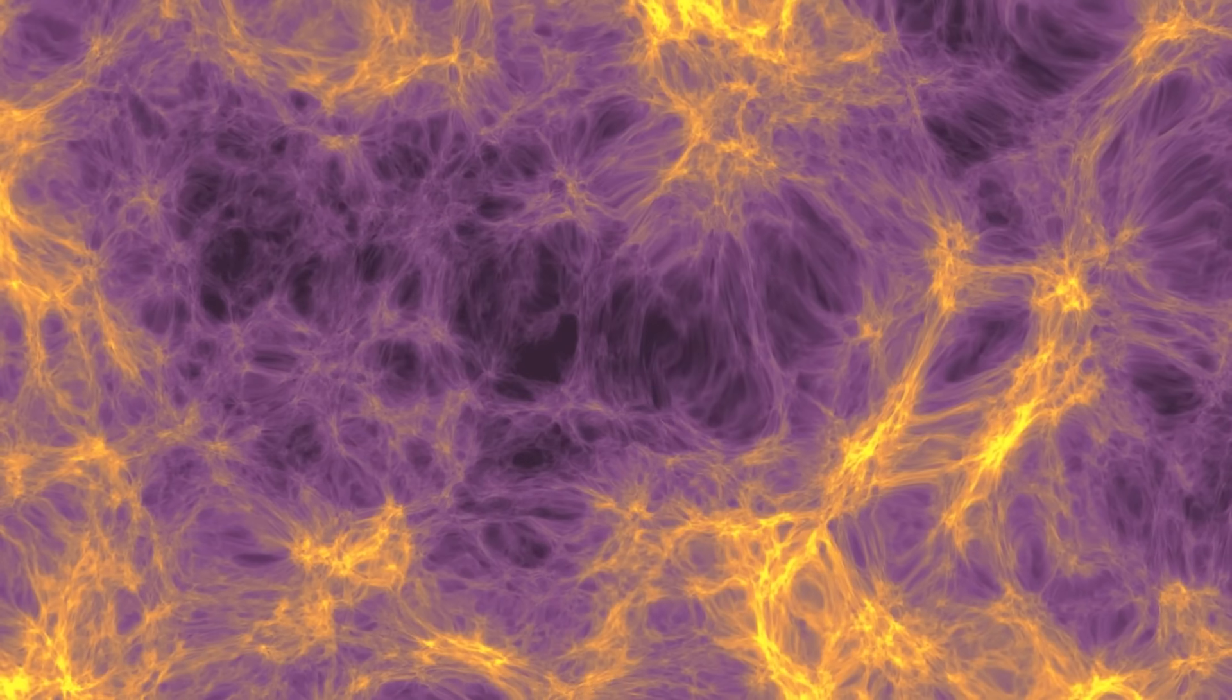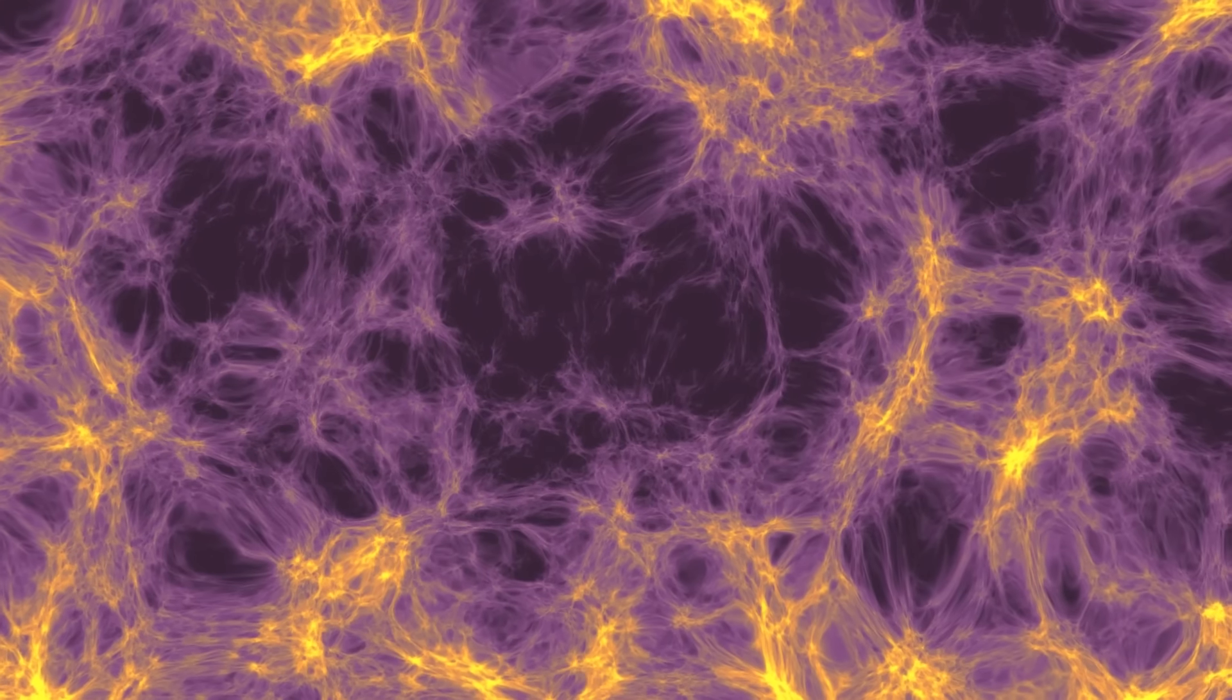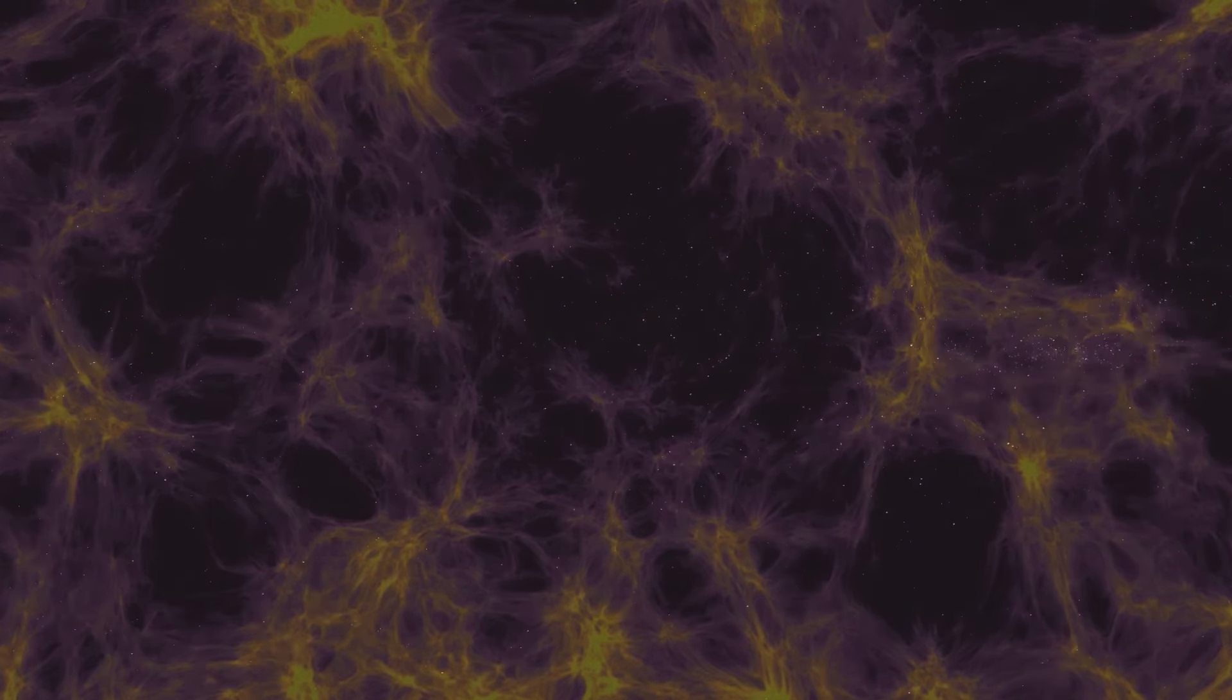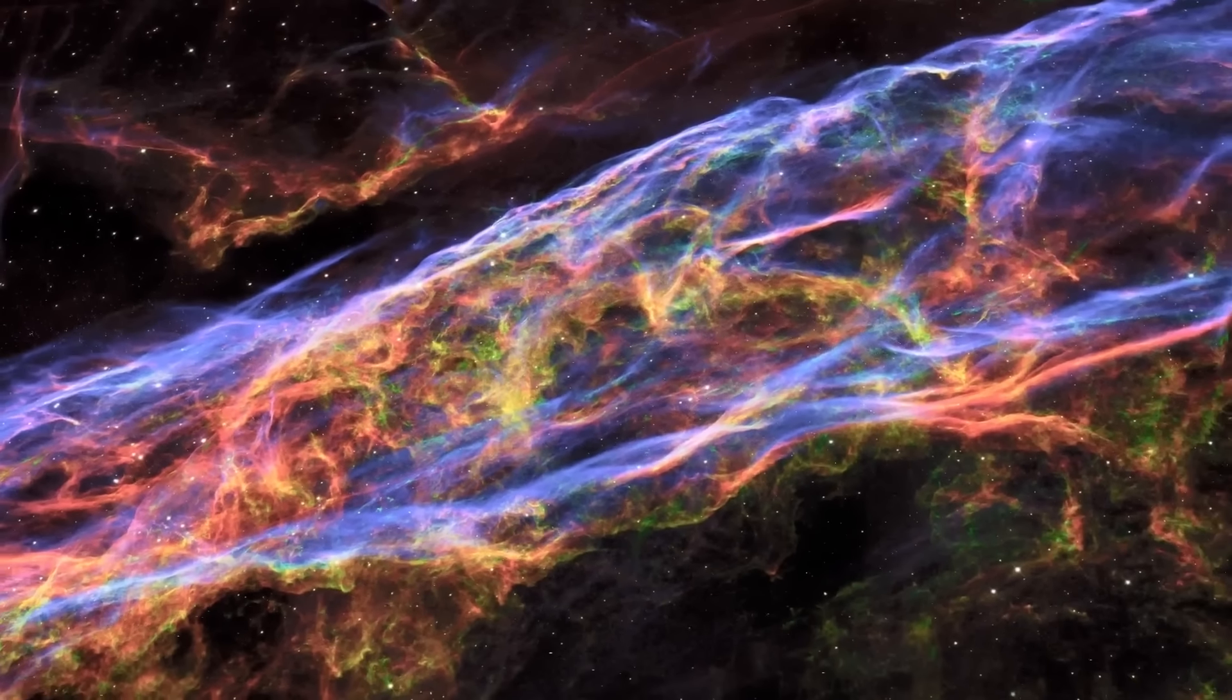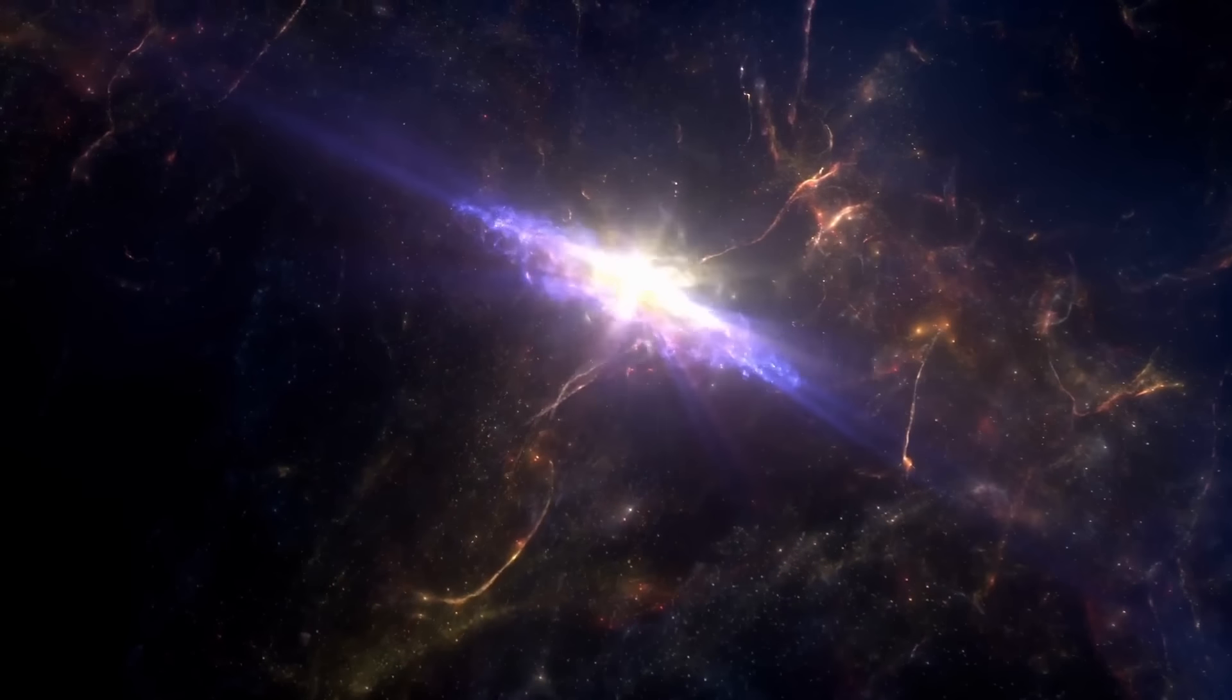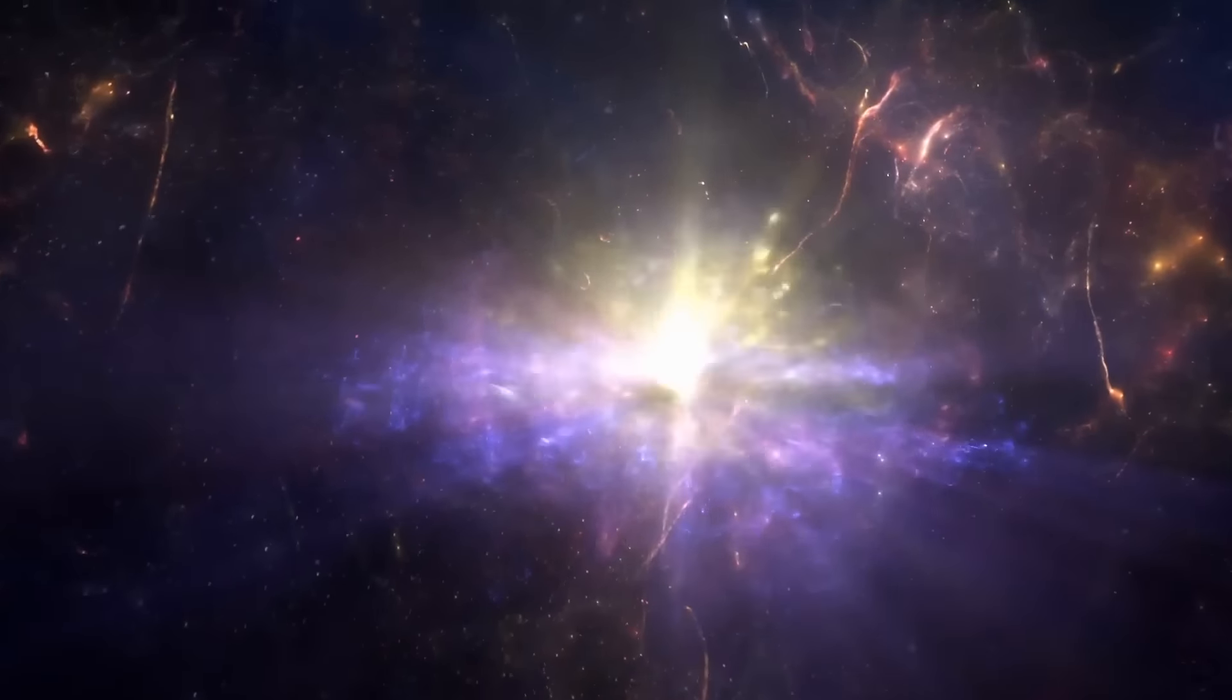As a result, their gravitational pull became stronger, and they began stealing matter from less dense regions. This made such areas even denser, and they kept attracting more and more matter. At the same time, smaller clumps of matter started drifting further away from the center, forming galaxies.